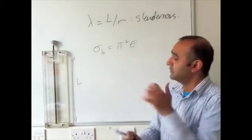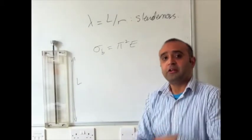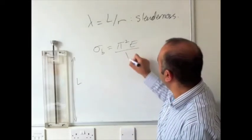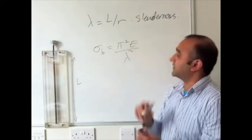For example, for steel, a very common structural material, the value is 2 times 10 to the 11 newtons per square meter. Divide that by lambda squared, the slenderness that we defined earlier.